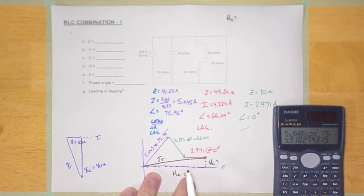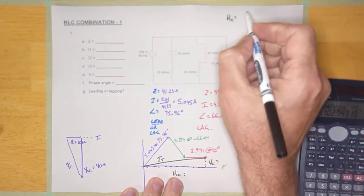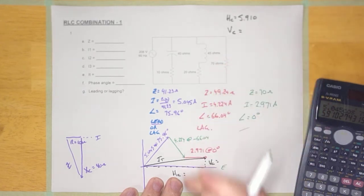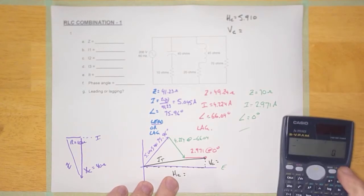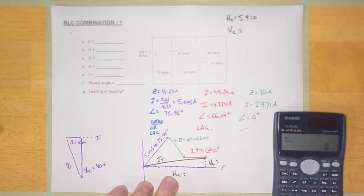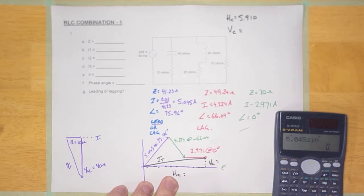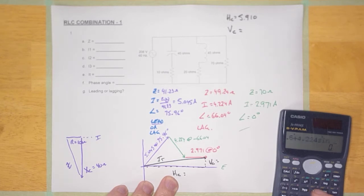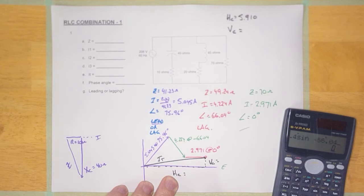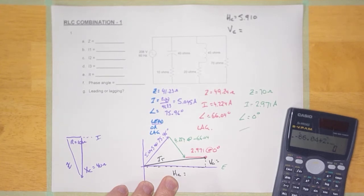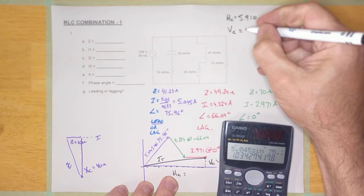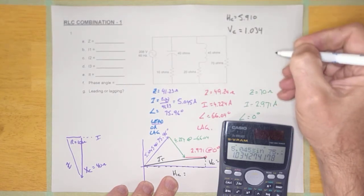The horizontal component is 5.910. And the vertical component is exactly the same thing but with sine: 5.045 sine(75.96), plus 4.224 sine(-66.04), plus 2.971 sine(0). The vertical component equals 1.034.